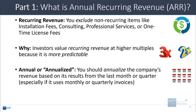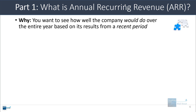The annual or annualized part means that you need to annualize the company's revenue based on its results from the most recent month or the most recent quarter. This is especially important if the company uses monthly or quarterly invoices. You do this because you want to see how well the company would do over the entire year based on its results from a fairly recent period.